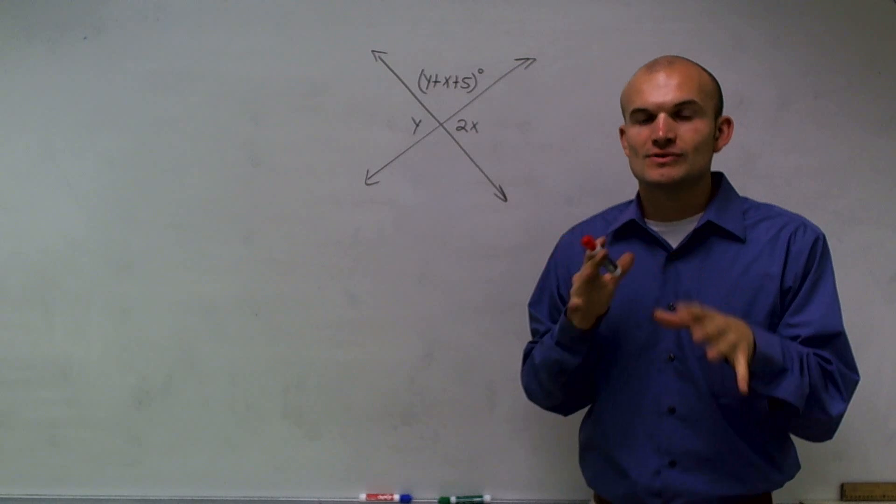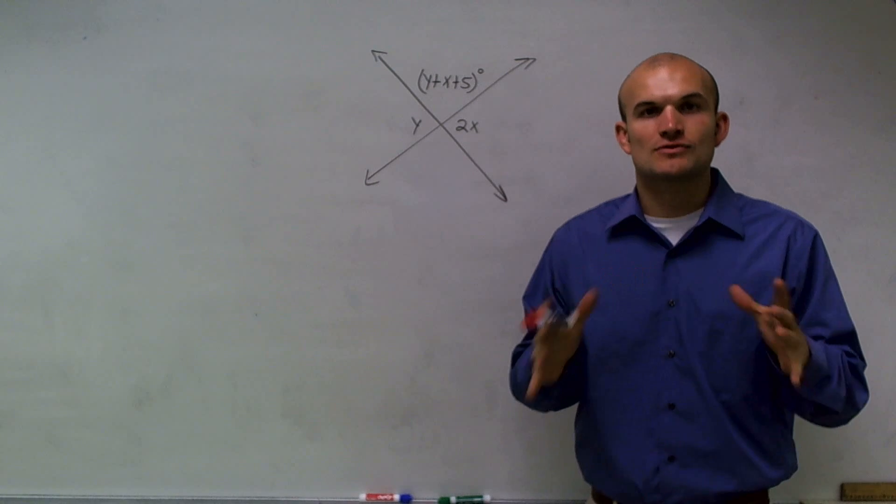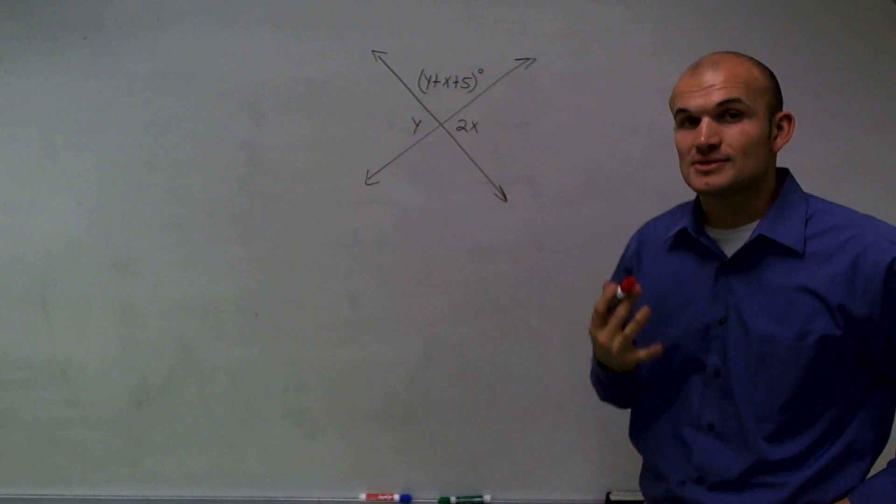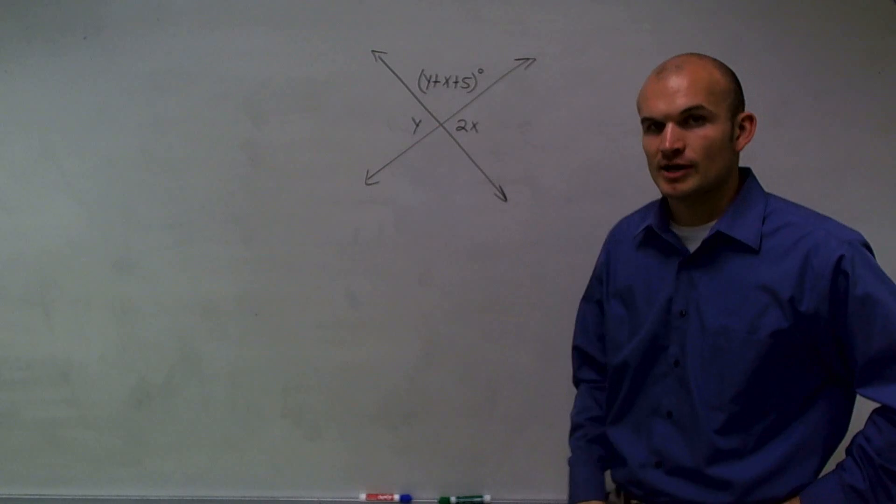We can use angle properties, or how angles relate to each other, to solve for the value of x or y. What makes this problem difficult is we have two different variables.